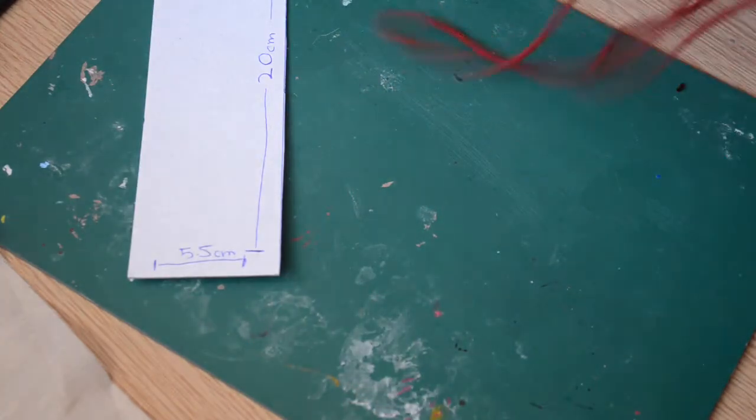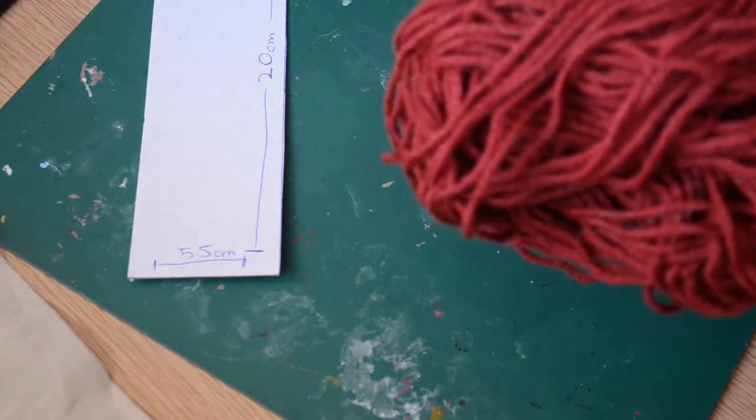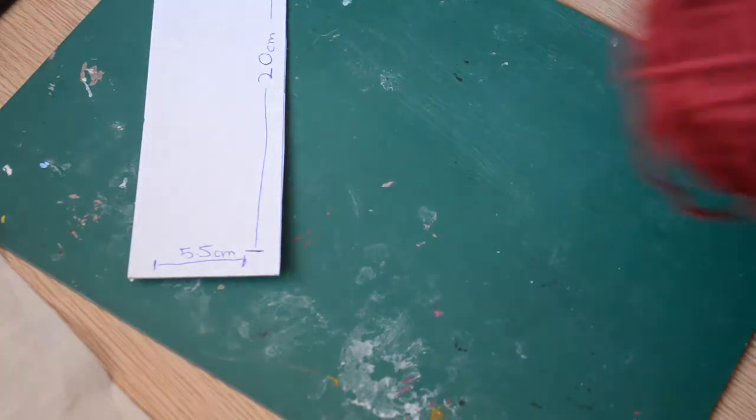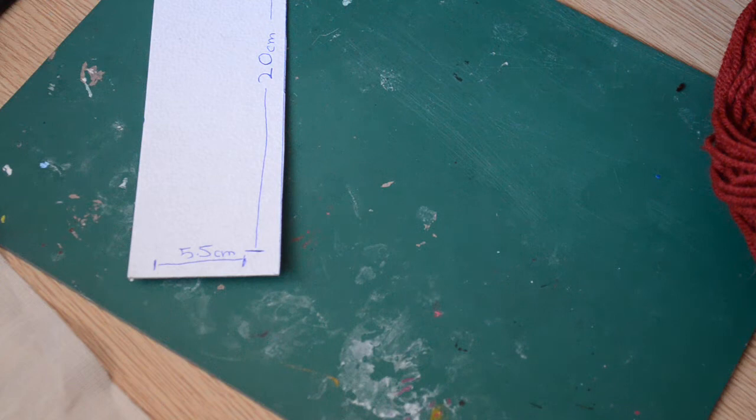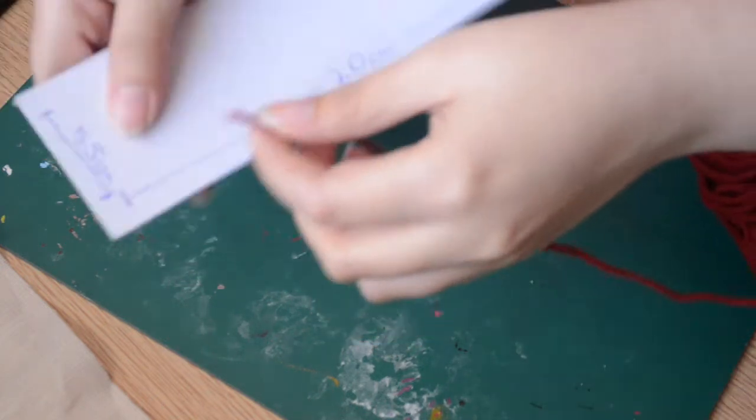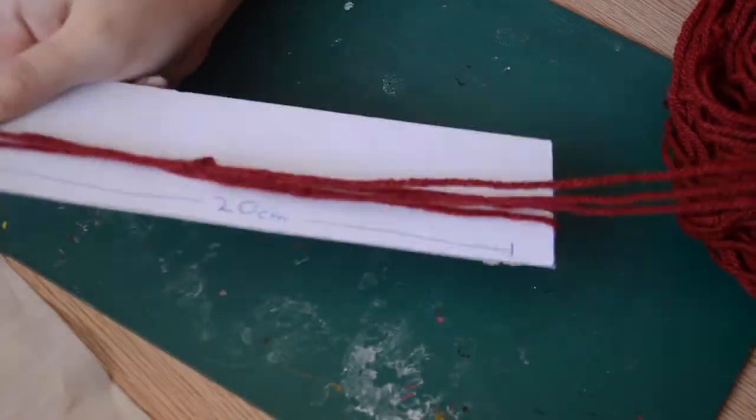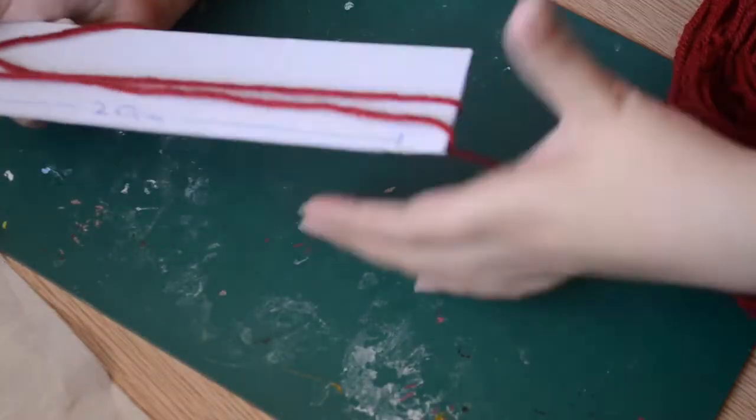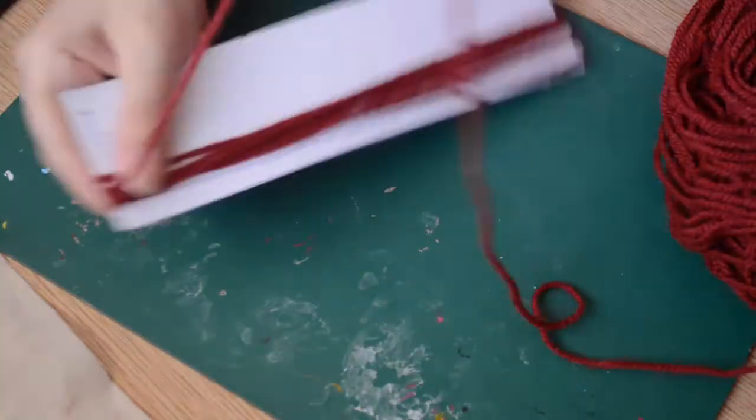First, we will take the yarn and wrap it around the cardboard strip. My yarn is 20 centimeters long. This will make approximately 15 centimeters weft. Wrap it around, and around, and around.